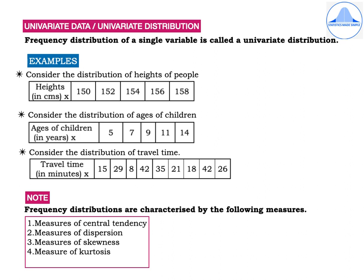The second example, let us consider the distribution of ages of children. Suppose we have ages of children in years which is denoted by small x and the values are 5, 7, 9, 11 and 14.